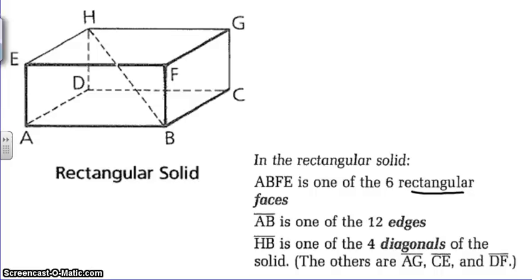HB is one of the four diagonals of the solid. The other ones would be AG. These diagonals of the solid, they would actually cut through the solid. They would not be on one of the faces. And there's four total of those: AG, CE, DF, and HB.